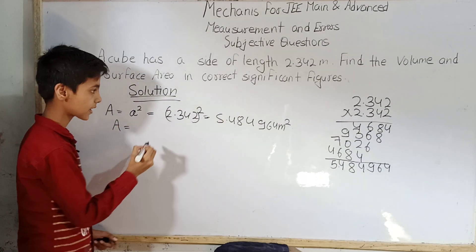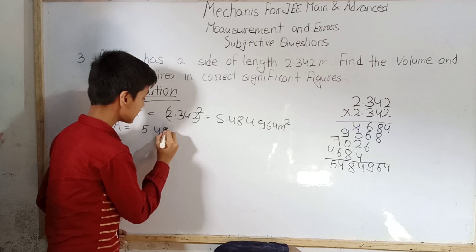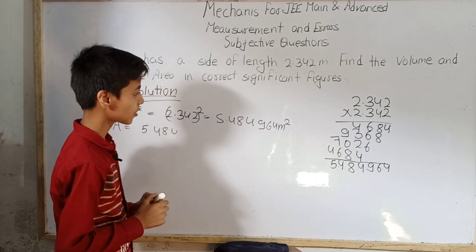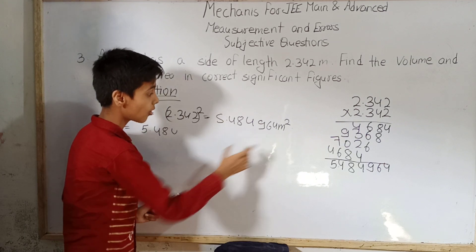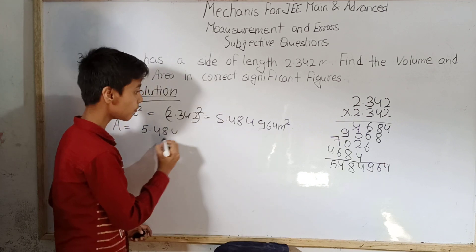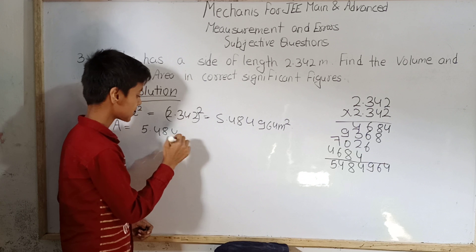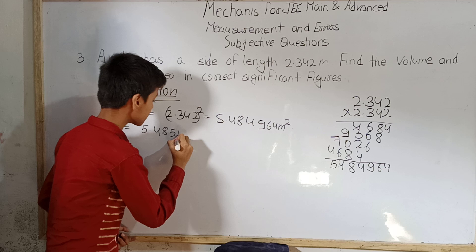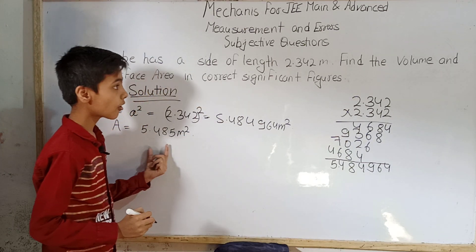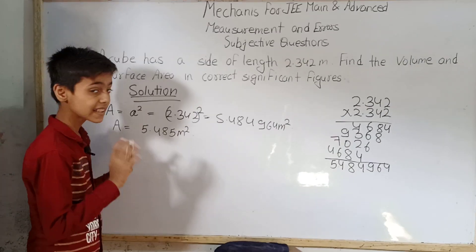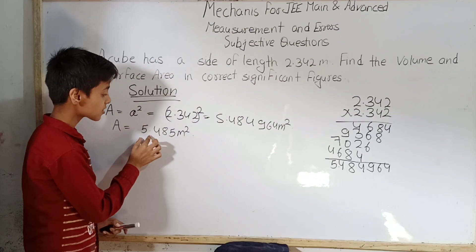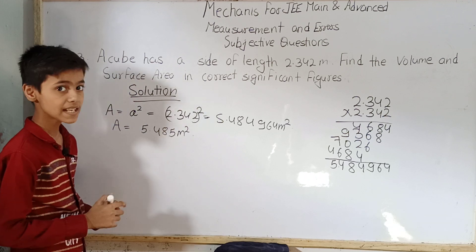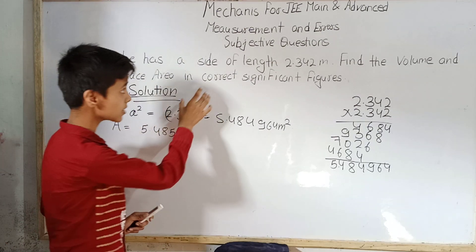So A squared equals 5.484964 meter squared. Now we round this off to four significant figures, giving us area A equals 5.485 meter squared. This is our first answer — the surface area of the cube.